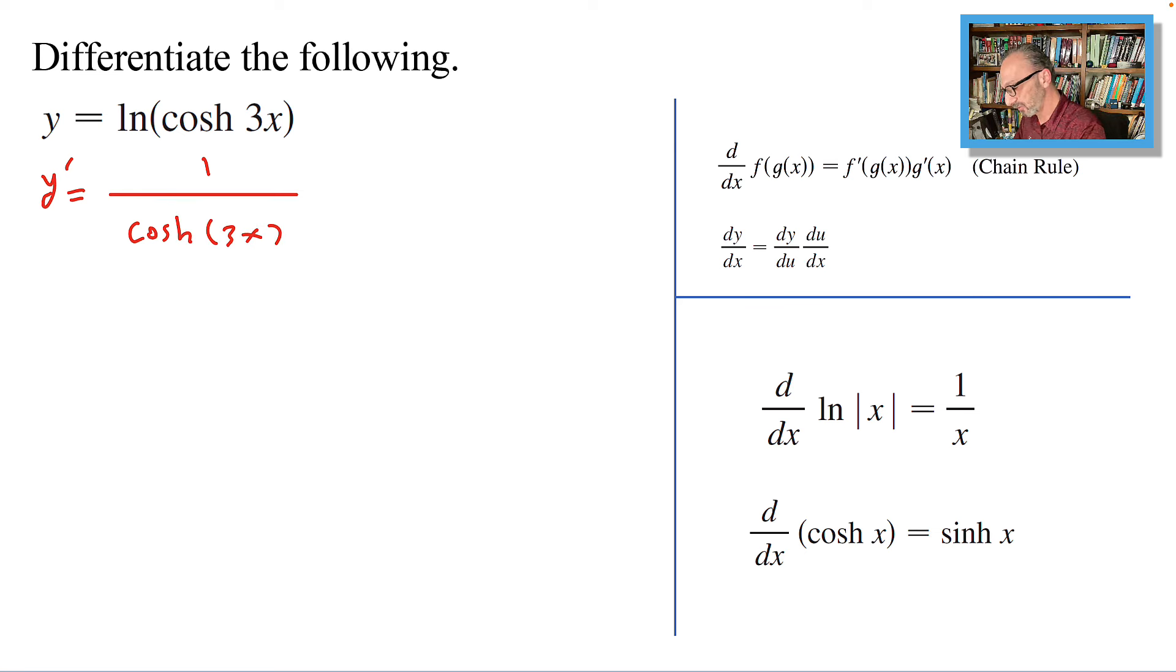Times the derivative of the inside part, because this is like my u, ln u. If you have ln u and you want to find the derivative of ln u, you will end up with 1 over u times u prime.